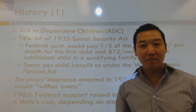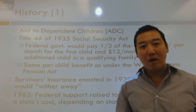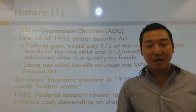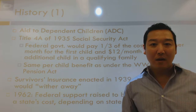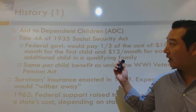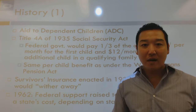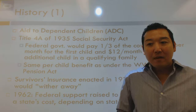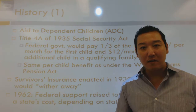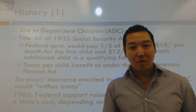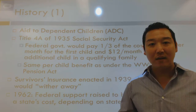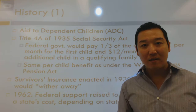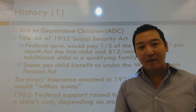Our welfare system has been financed through a combination of both federal and state administration. The federal government in the early years contributed 33% of costs — with payment levels of $18 per child for the first child and $12 for each additional child — matching whatever the states were spending. By 1962, this financing formula shifted to between 50% and 80% of costs. Most welfare programs use an inverse formula: the richer the state, the lower the federal contribution; the poorer the state, the greater the federal contribution.